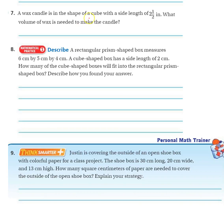A wax candle is in the shape of a cube, so I know all the sides are going to be the same length. Side of 2½. What is the volume?